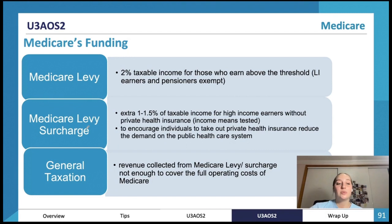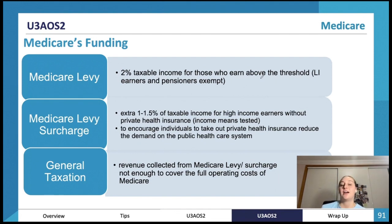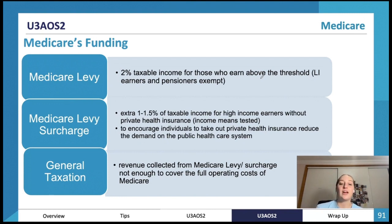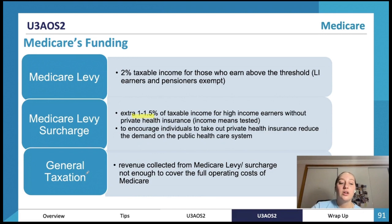Medicare is funded in three ways: the Medicare levy — 2% of taxable income for those who earn above a certain threshold; an extra 1% to 1.5% of taxable income for high-income earners without private health insurance, which is actually an incentive for people to take out private health insurance to avoid that extra tax; and general taxation, part of which also goes towards Medicare.